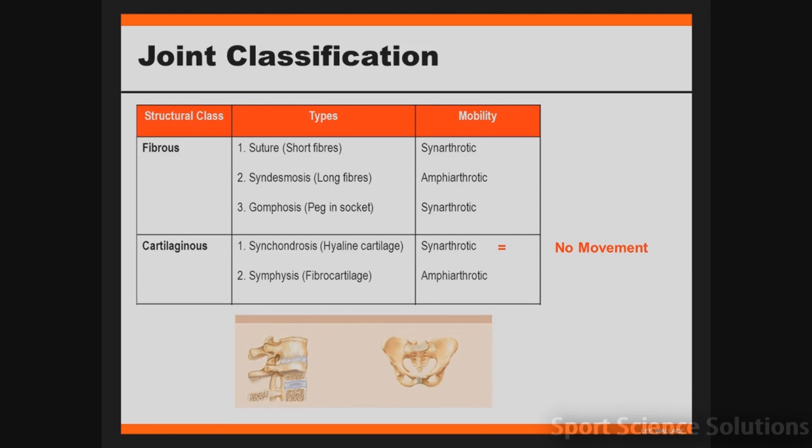The second type of cartilaginous joint is called a symphysis joint, which refers to cartilaginous joints joined via fibrocartilage. In comparison to synchondrosis joints, they have a little bit more give and movement. So they're classified as amphiarthrotic in mobility, meaning slightly moveable. The two examples here are intervertebral discs and our pubic symphysis.